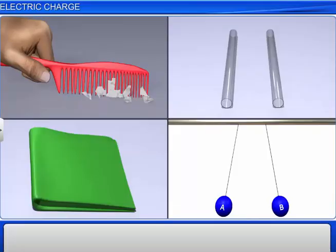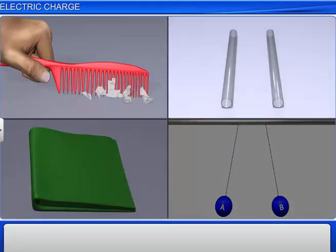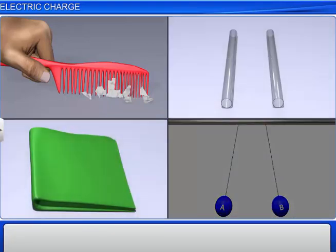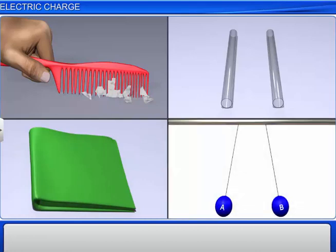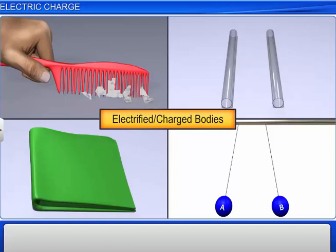From previous examples, bodies like combs, glass rods, silk cloth pieces, pith balls, etc., are said to be electrified or are called charged bodies.